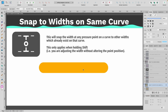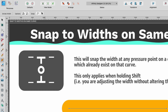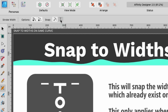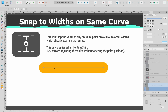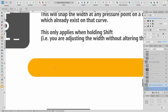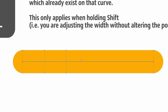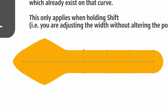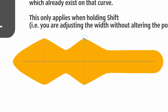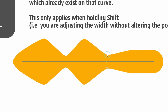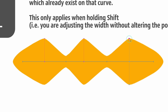Let's look at the final snapping option: Snap to Widths on Same Curve. I have a new stroke here. I'll click W and then select Snap to Widths on Same Curve. This allows us to use snapping to get uniform widths. If I add a few pressure points and drag one out, then click on another pressure point that I want to snap to the first one, because snapping is turned on, you see it activates and snaps — it's exactly the same height. Very handy indeed.